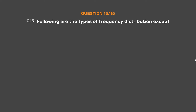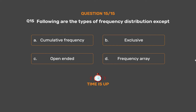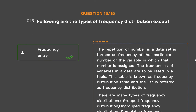Question number 15. Following are the types of frequency distribution except: Option A: Cumulative frequency. Option B: Exclusive. Option C: Open-ended. Option D: Frequency array. The correct answer is Option D: Frequency array. The repetition of a number in a data set is termed as the frequency of that particular number or variable. The frequencies of variables in data are listed in a frequency distribution table. There are many types of frequency distributions: grouped frequency distribution, ungrouped frequency distribution, cumulative frequency distribution, relative frequency distribution, and relative cumulative frequency distribution.